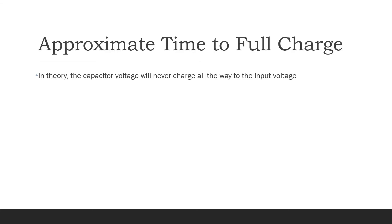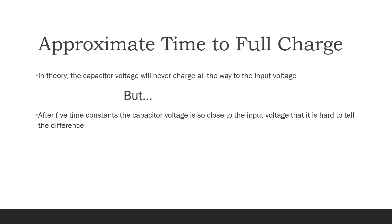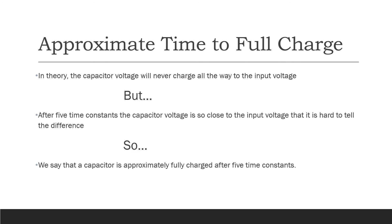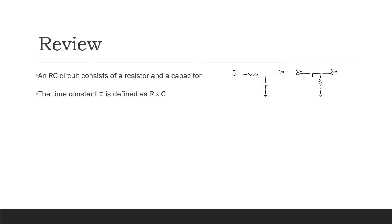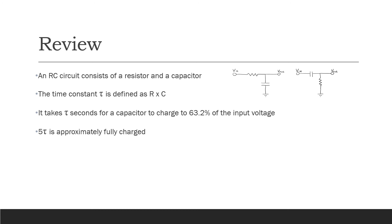In theory, the capacitor will never fully charge to the input value. But after five time constants, the capacitor voltage is really, really close to the input voltage — so close that it's pretty hard to tell the difference. So we say that after five time constants, the capacitor is approximately fully charged. To review: an RC circuit consists of a resistor and a capacitor. The time constant tau is R times C. It takes tau seconds to charge to 63.2% of the input voltage, and five time constants is approximately the time it takes to fully charge.